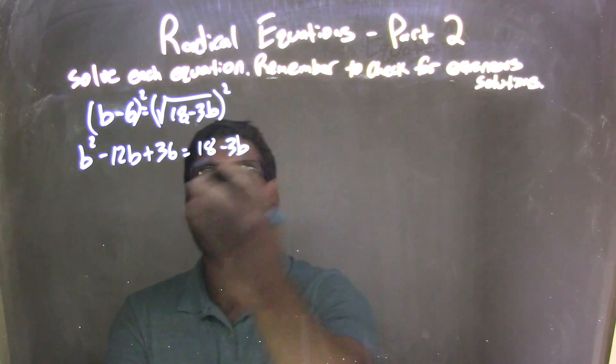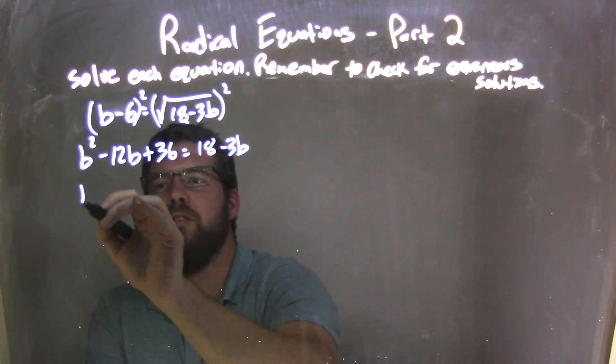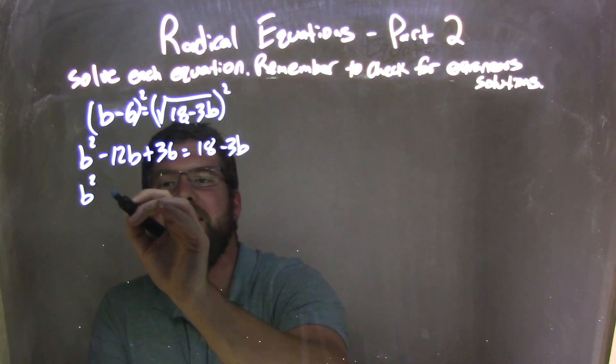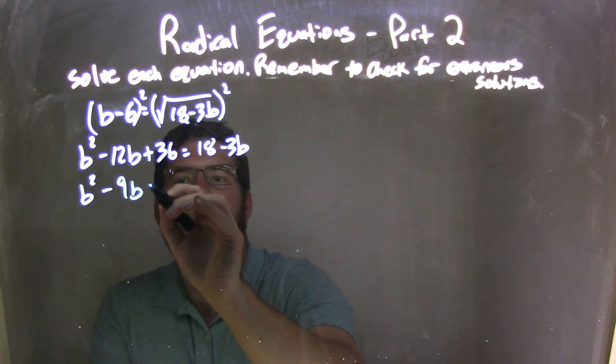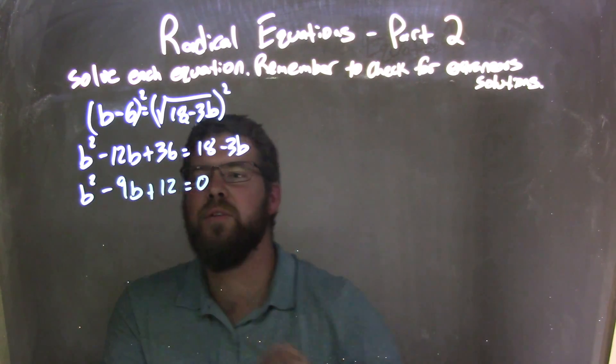From there, let's bring over the 18, bring over the 3b, so I subtract 18 from 36 and add a 3b. So b squared, negative 12b plus a 3b when I bring it over here is a negative 9b, plus 36 minus 18 is a positive 12, and set it equal to 0.